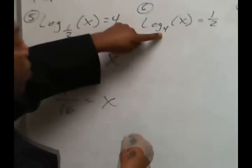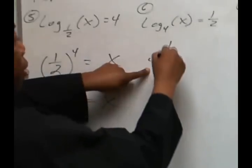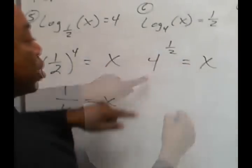Here, we have a base of 4, so we write the exponential base of 4, and 1 half as a power, and then we'll make this equivalent to x.